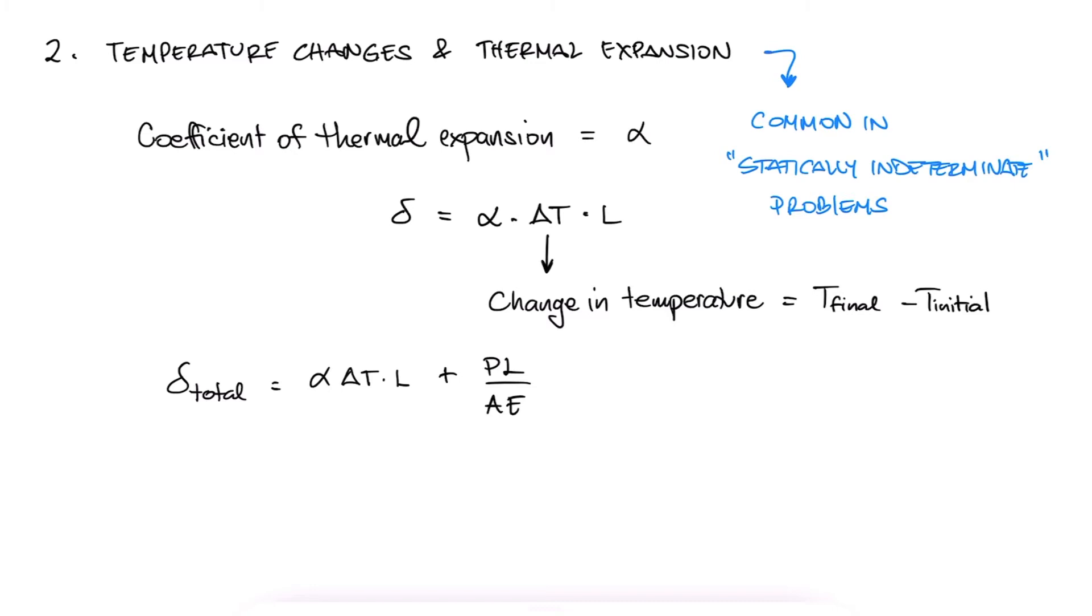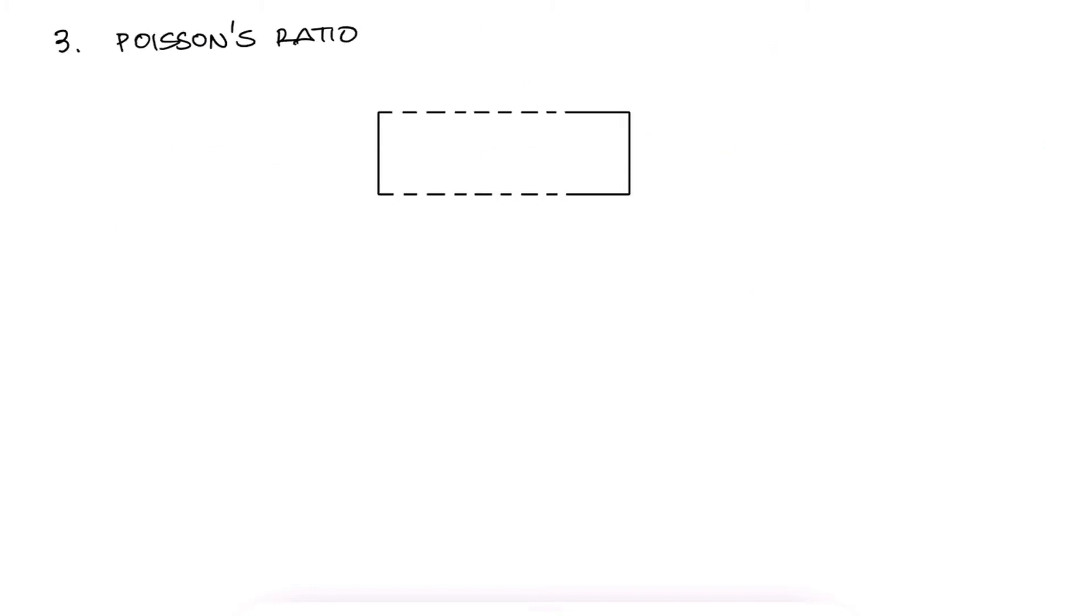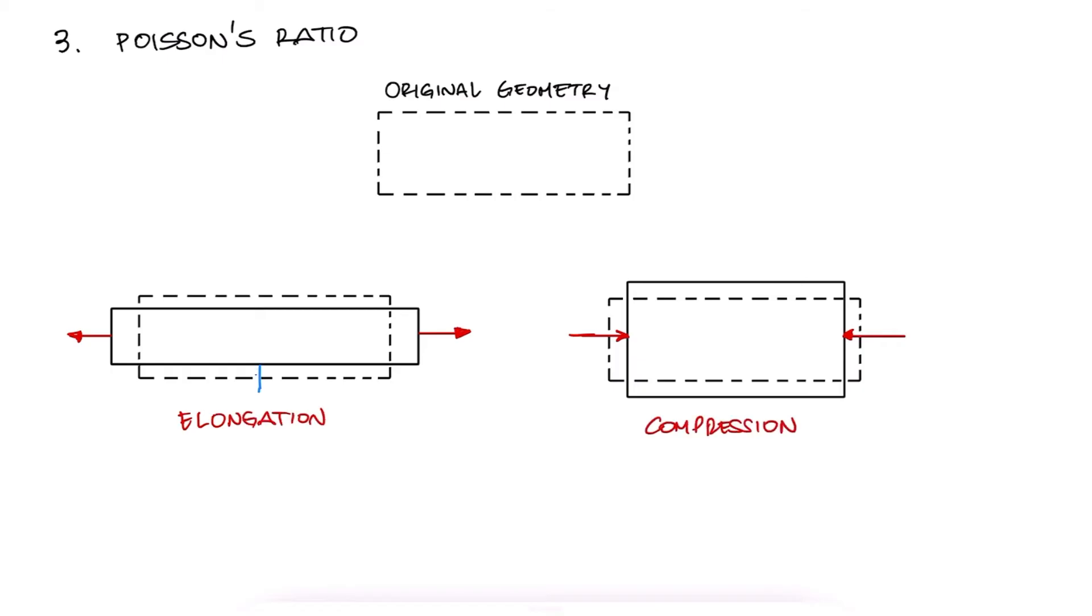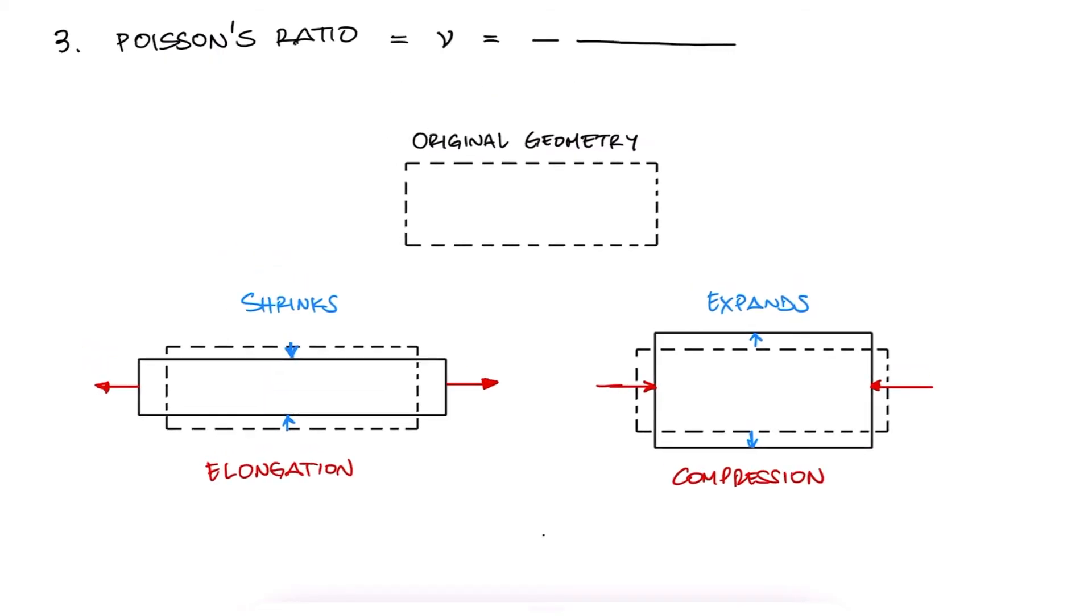Now, every time a geometry is elongated or compressed in one axis, the other axes will shrink or expand respectively, usually. This behavior is only true for Poisson's ratio values between 0 and 0.5, but we'll get to that in a minute.